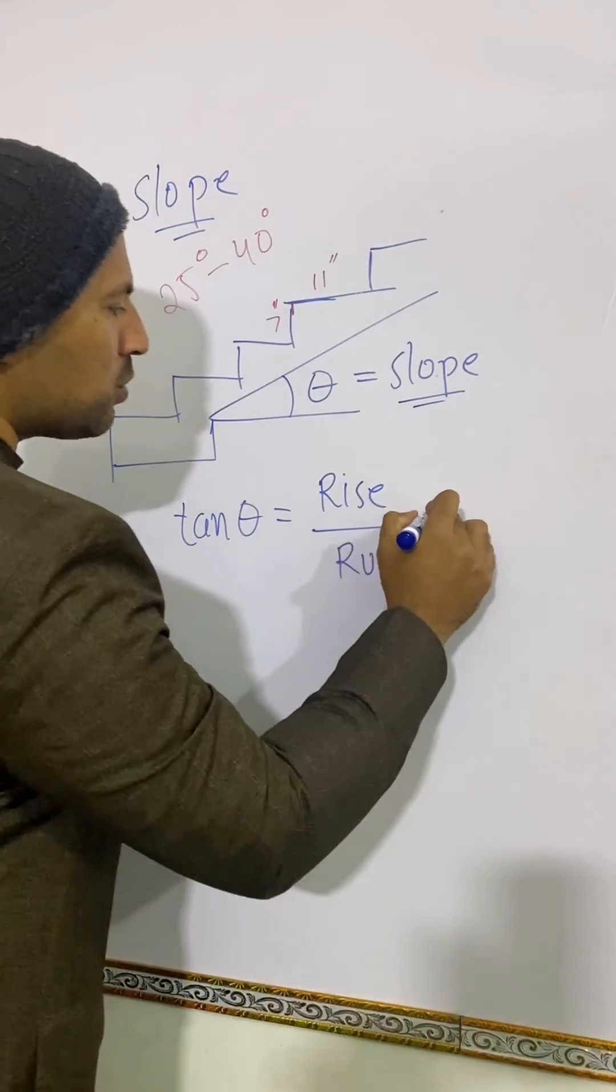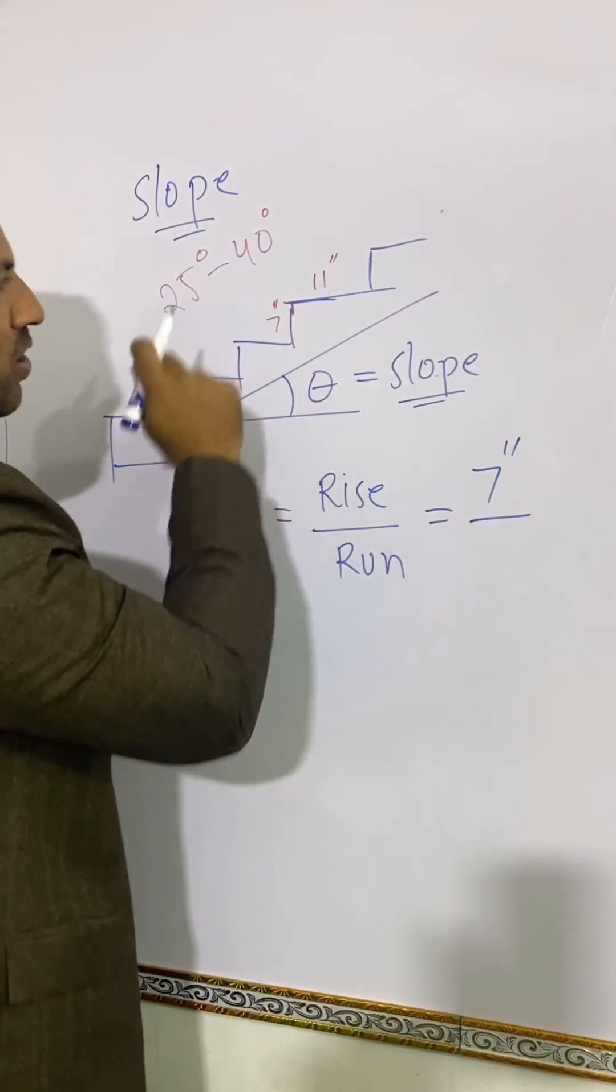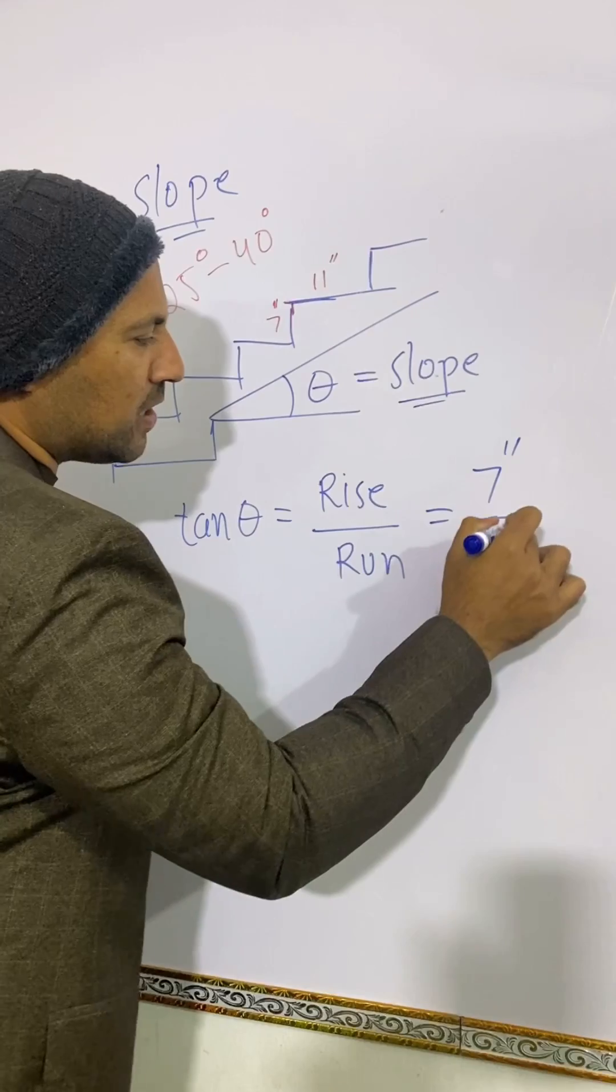We can put those values here. The rise is 7 inches and the run is 11 inches.